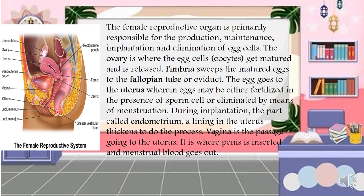The ovaries are where egg cells get matured and are released. The fimbrae sweeps the matured egg into the fallopian tube or oviduct. The egg then goes to the uterus where it may either be fertilized in the presence of sperm cells, or eliminated by menstruation. During implantation, the endometrium lining the uterus begins the process. The vagina is the passage to the uterus where the penis is inserted and menstrual blood exits.